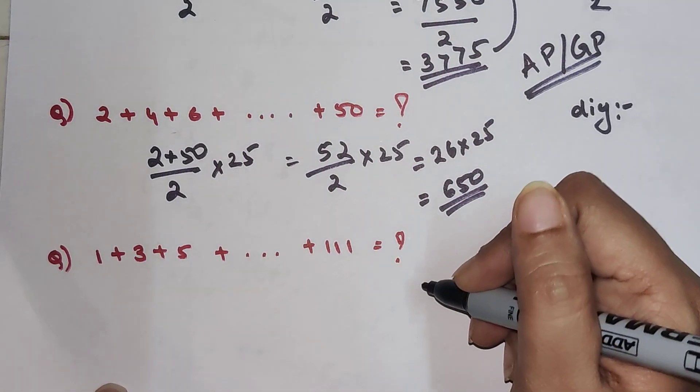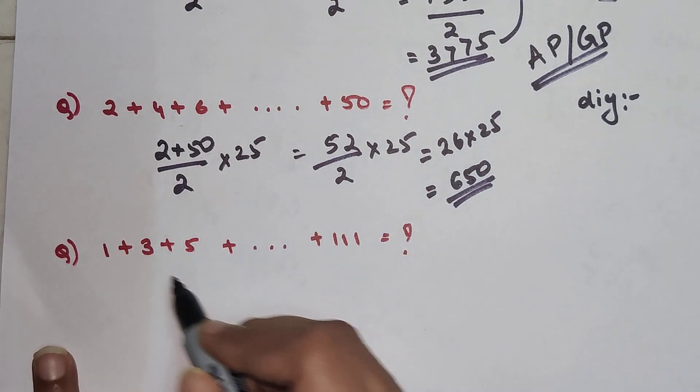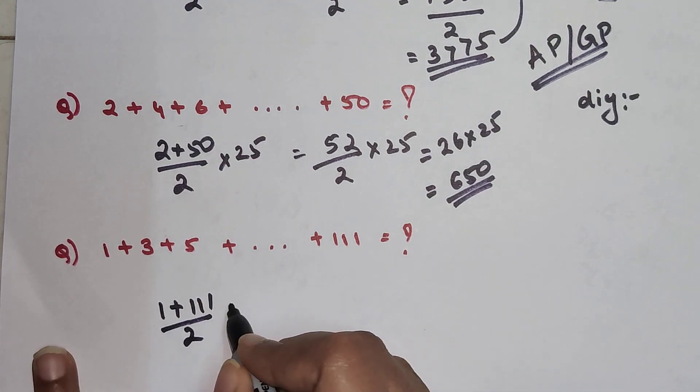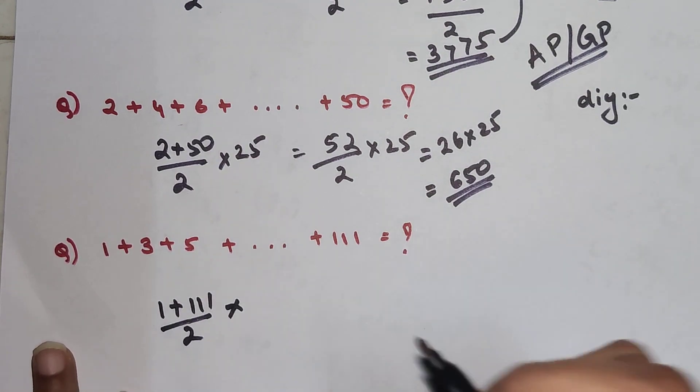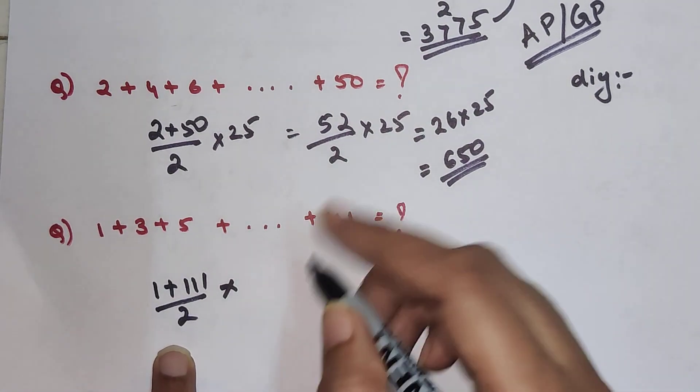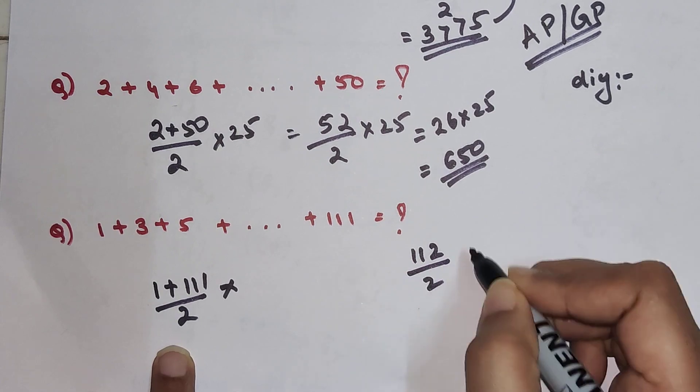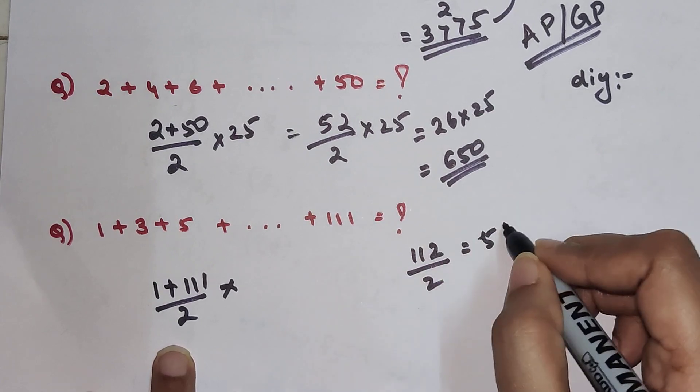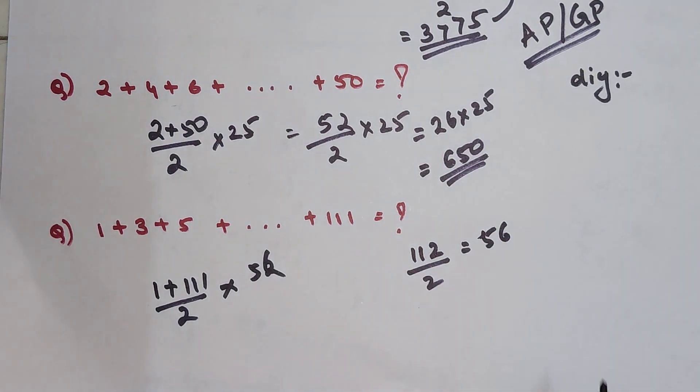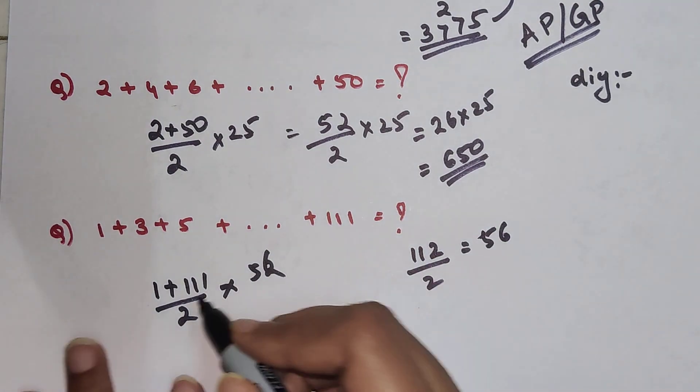Now this over here is 1 plus the last value, which is 111, divided by 2. You might be wondering how we will find the half of it. When you have something like this, you add 1 to it: 112 divided by 2, you get 56.